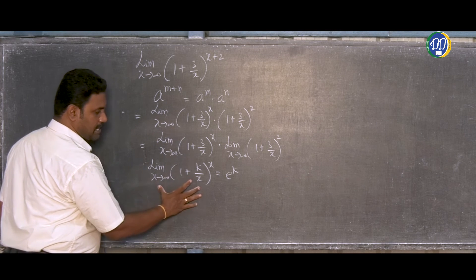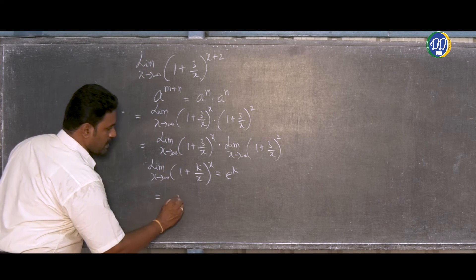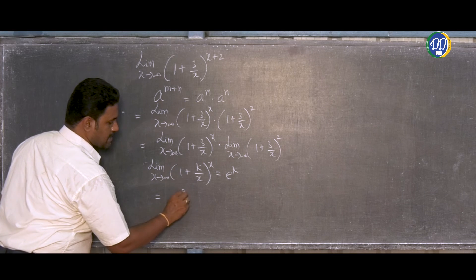For the first term, limit x tends to infinity (1 + 3/x)^x, we use the standard result: e^k where k equals 3.